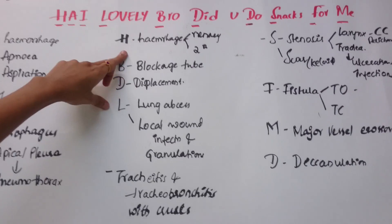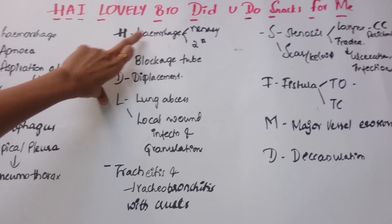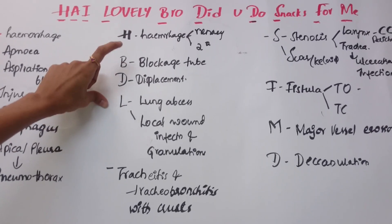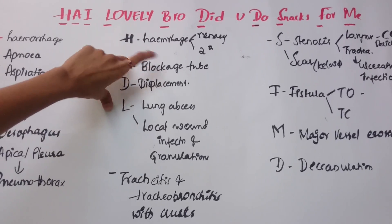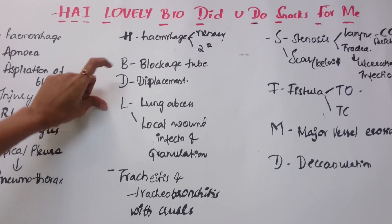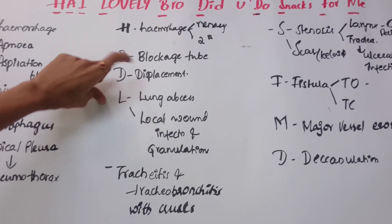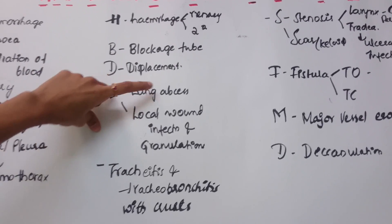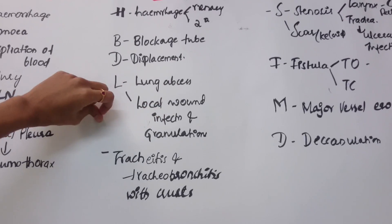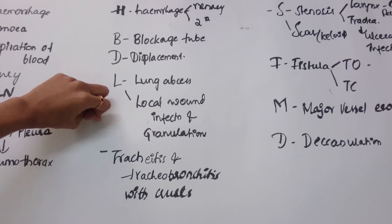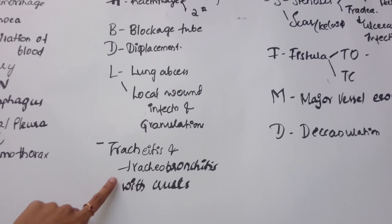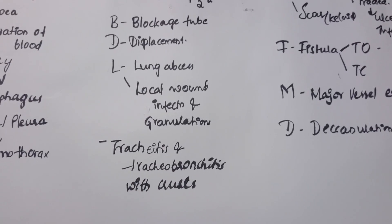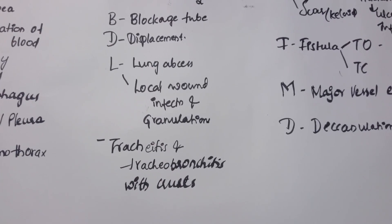Coming to intermediate complications: H for hemorrhage, which may be reactionary or secondary. B for blockage of the tube, and D for displacement of the tube. L for lung abscess and local wound infection and granulations. Others include tracheitis and tracheobronchitis.